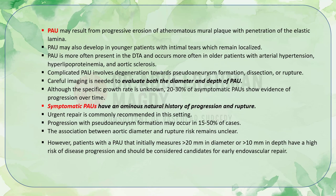Penetrating aortic ulcer may result from progressive erosion of an atheromatous mural plaque with penetration of the elastic lamina, invading into the medial layer of the aortic wall. It may develop in younger patients with an intimal tear that remains localized, but is more often present in the descending thoracic aorta in older patients with arterial hypertension, hyperlipoproteinemia, and aortic sclerosis. A complicated penetrating aortic ulcer involves degeneration toward pseudoaneurysm formation after disruption of all aortic layers, or longitudinal or spiral extension of blood.